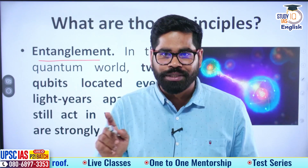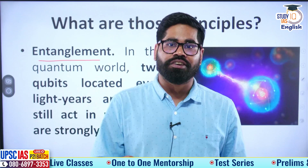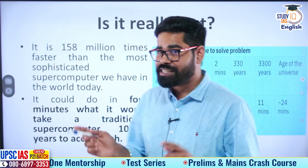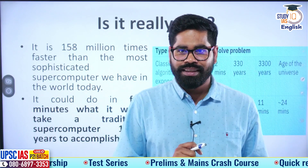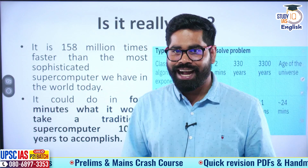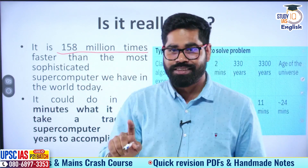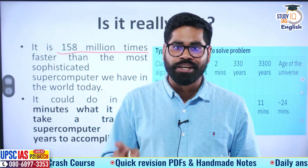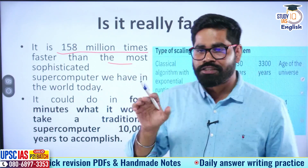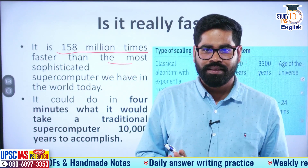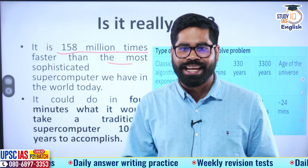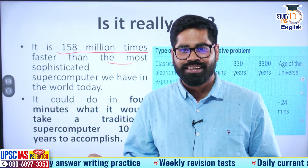Quantum computing uses the principles of quantum entanglement and quantum superposition in order to solve complex calculations, and it is able to solve these complex calculations in a fraction of the time that a classical computer takes. It has been said that the speed of quantum computers can be as high as 158 million times — 158 million times in comparison to the most sophisticated supercomputers we have in the present times. It is not 10 times, 100 times, or 1000 times — it is 158 million times faster.